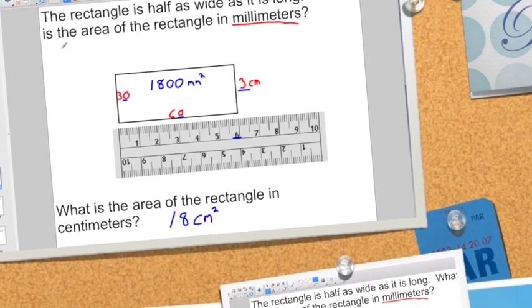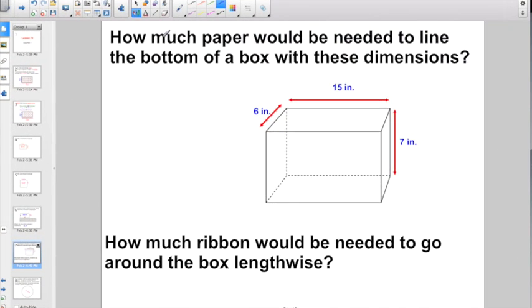Take a look here. How much paper would be needed to line the bottom of a box with these dimensions? I just want to put some paper just on the bottom of the box. I'm not worried about anything else other than putting a sheet of paper along the bottom of the box. That sounds like an area problem to me. So figure out along the bottom of the box here, looks to me like this line would be 15 because this line up here is 15, and it looks like this line would be 6 because this line up here is 6.